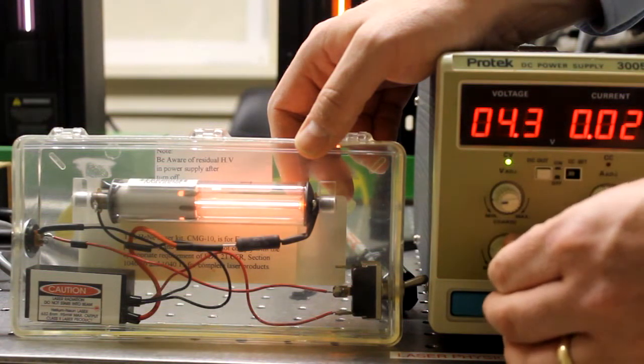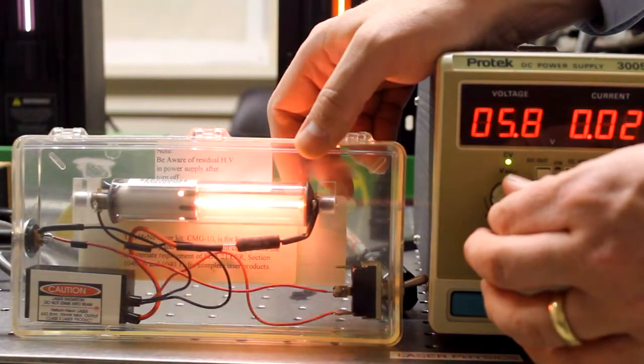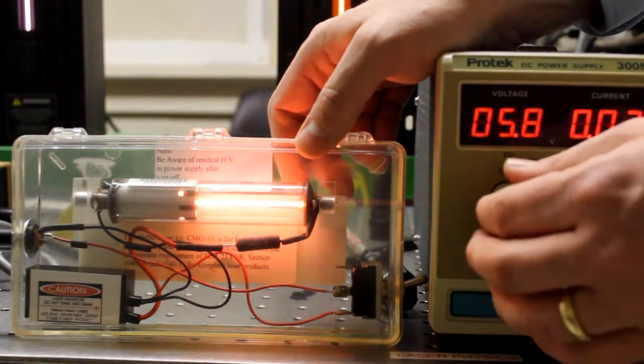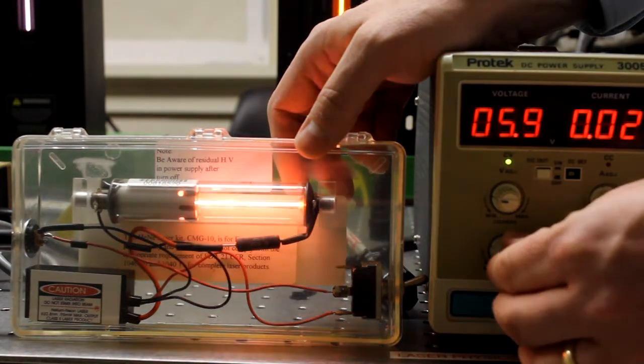Finally, around the time we get to six, six and a half volts, the laser stabilizes. And from then on, more voltage just increases the brightness.